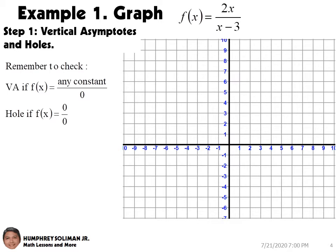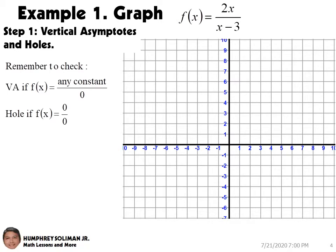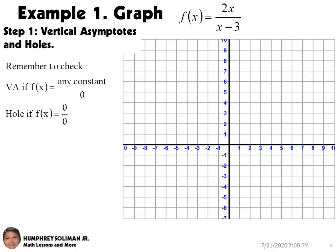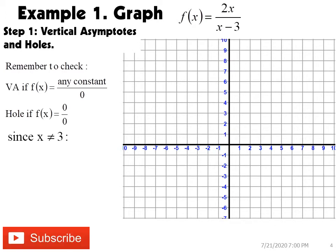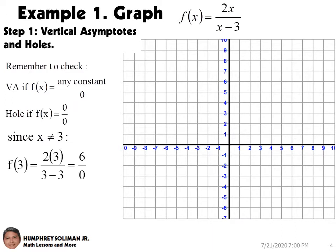Let's try an example. Let's graph the following rational function. In step number one, we are going to find the vertical asymptote or hole for this function. In the given rational function, our denominator is x minus three. This will tell us that x is not equal to positive three. If we use this value of x, we will have six over zero. This means we have a vertical asymptote and not a hole.